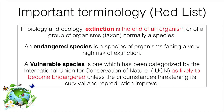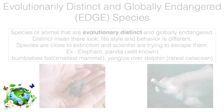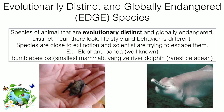An endangered species is a species of organisms facing a very high risk of extinction — they are just before extinction. A vulnerable species is one categorized by the International Union of Conservation of Nature as likely to become endangered unless the circumstances threatening its survival and reproduction improve. So there are three stages: initially a species is vulnerable, then it becomes endangered, and finally it reaches extinction.